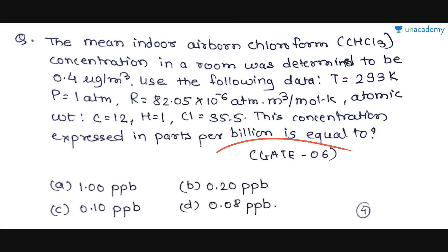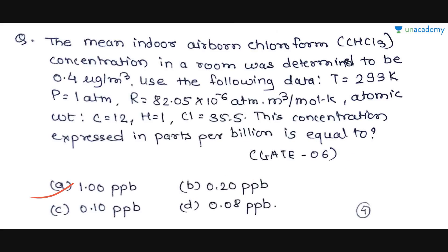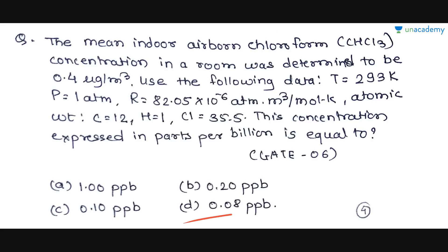This question was asked in GATE 2006. Option A is 1 ppb, option B is 0.20 ppb, option C is 0.10 ppb, and option D is 0.08 ppb. We have to calculate the answer in ppb from those respective options.